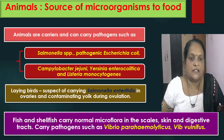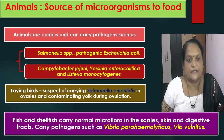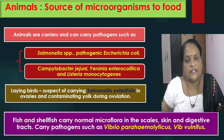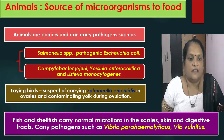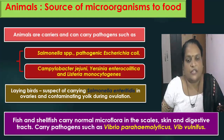Laying birds are suspects of carrying Salmonella enteritidis in their ovaries and therefore contaminating the yolk during ovulation. Fish and shellfish carry normal microflora in the scales, skin and digestive tracts. They carry pathogens such as Vibrio species like Vibrio parahaemolyticus and Vibrio vulnificus.